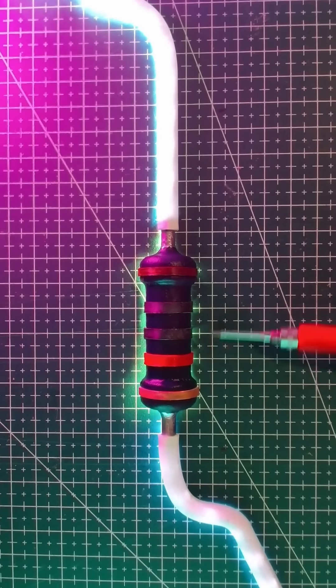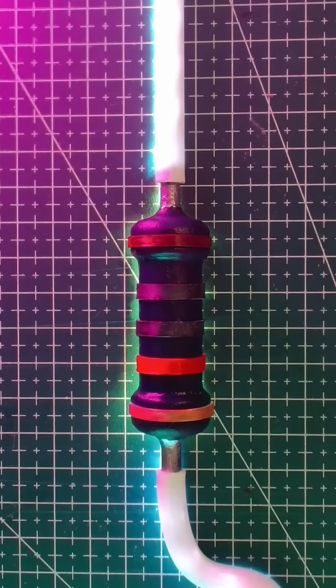So where did that energy go? It was converted into heat. As the electrons struggle to push through the resistor, they collide with atoms, causing the heat we see glowing here.